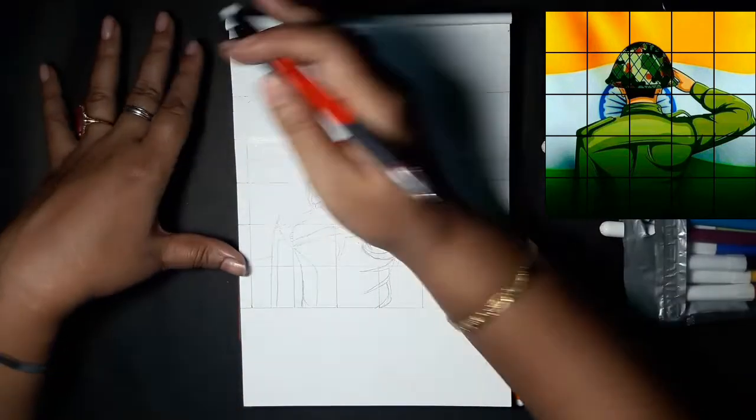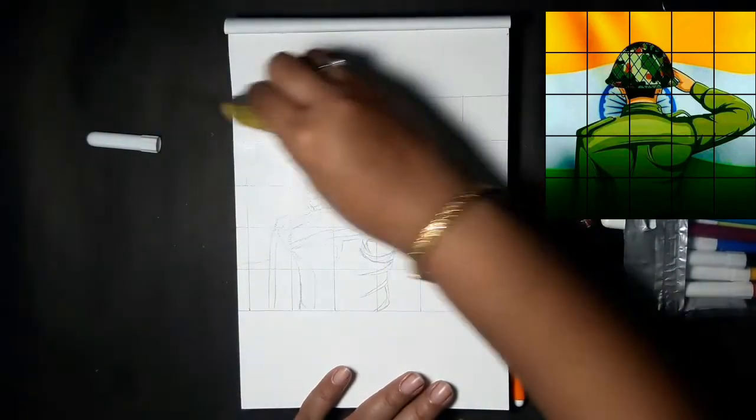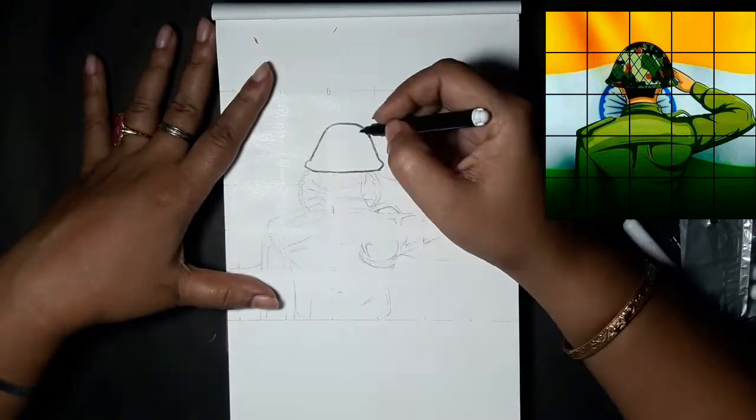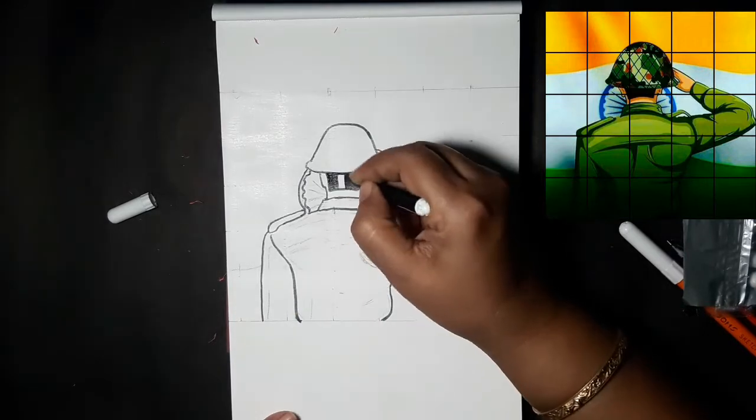Now delete the reference lines and double lines very nicely. Once it is done, start working with colors. First of all, I'm working with black color and just give one outline.